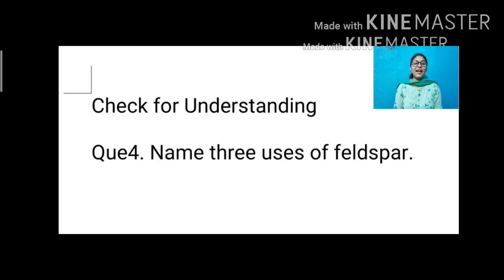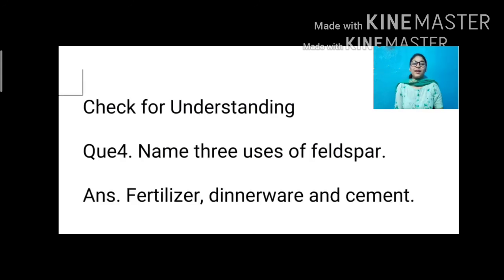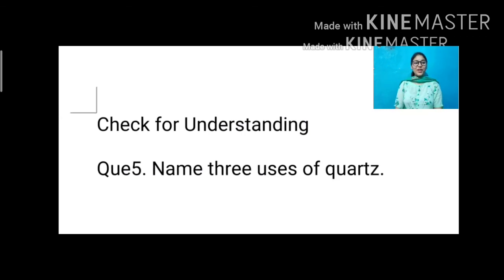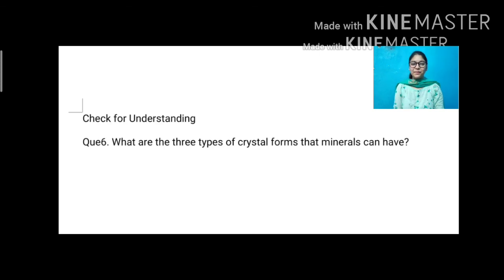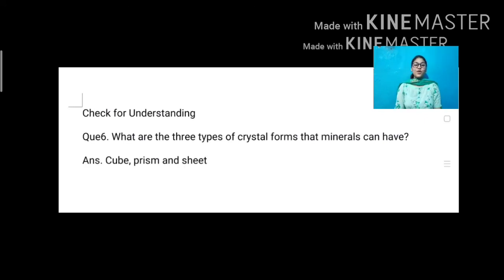Question number four: name three uses of feldspar. The first use is fertilizer, the second is dinnerware, and the third is cement. Question number five: name three uses of quartz. Three uses of quartz are watches, semiconductors, and glass. Question six: what are the three types of crystal forms that minerals can have? The three types of crystal forms are cube, prism, and sheet.